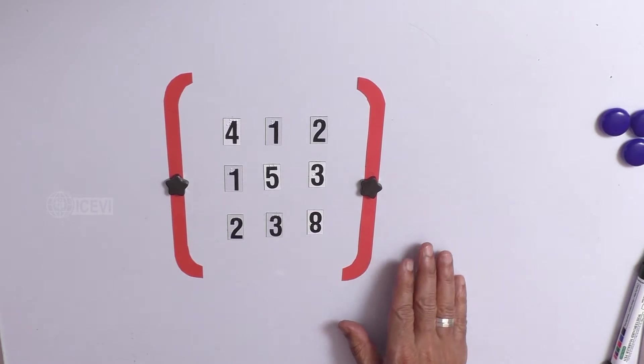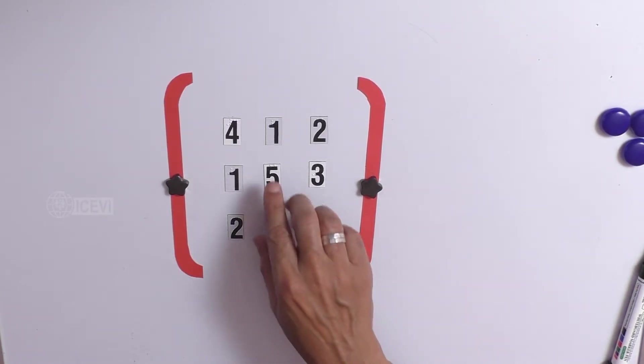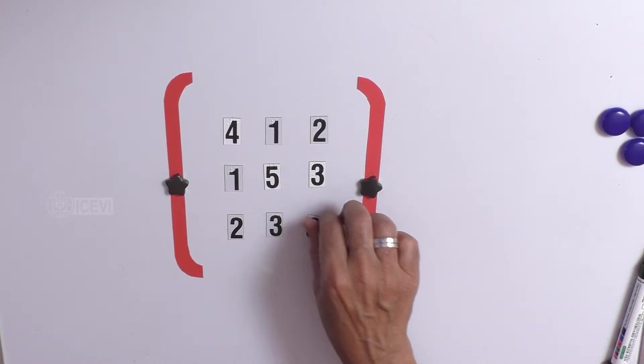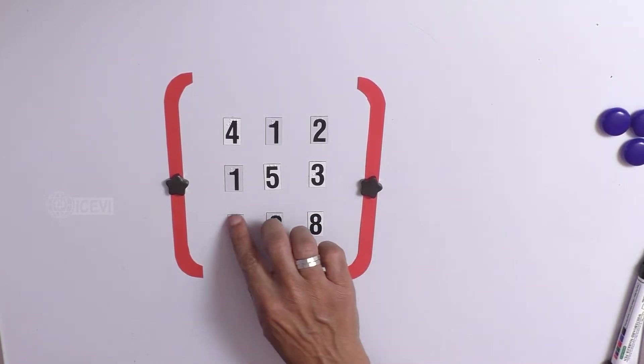You can create similar configuration in Braille too. And in these letters, you have Braille markings too. So, it will be easy for the child to identify.